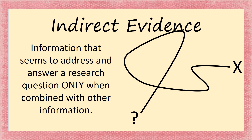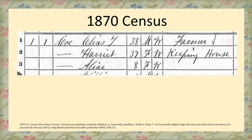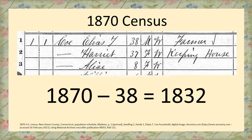Indirect information is information that seems to address the answer to a research question only when you combine it with other information or other sources. Our research question this time is: what year was Elias T. Coborn born? We know this is the 1870 census and that he was 38 years old at the time. Does that directly tell us what year he was born, or did you have to do a little bit of math to get there? That's a piece of indirect evidence, and we would probably want to find more evidence to bolster our case.